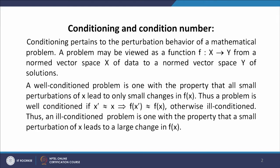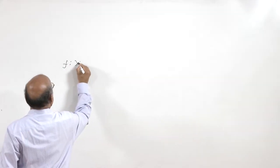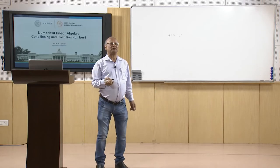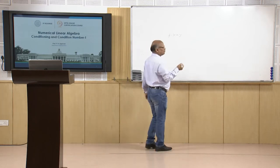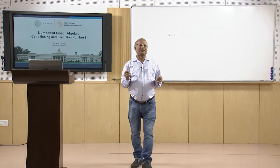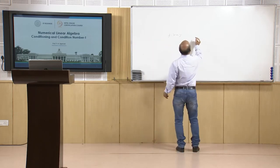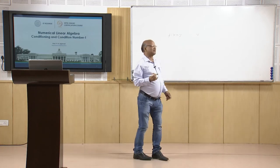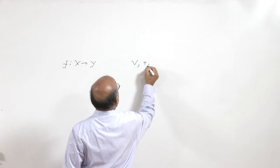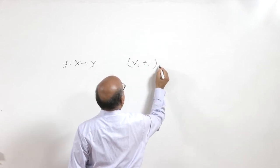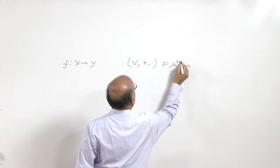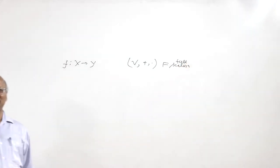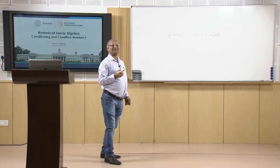F is a function from X into Y where X and Y are normed vector spaces; the vector space is also termed a linear space. As you know, a vector space is one where we have a collection of objects, say V, equipped with two operations — addition and scalar multiplication — and a field of scalars. V is called a vector space with respect to the operations of vector addition and scalar multiplication.